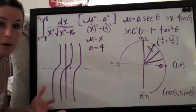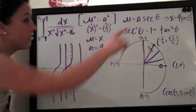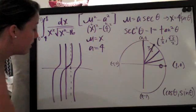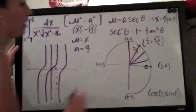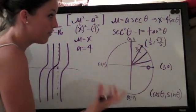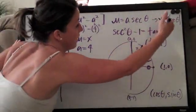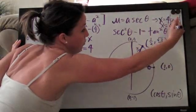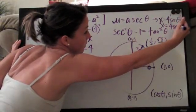So since it's positive, we can just drop those absolute value brackets without having to worry about it. So our x isn't going to be four times the absolute value of secant of theta. It's just going to be four secant theta.